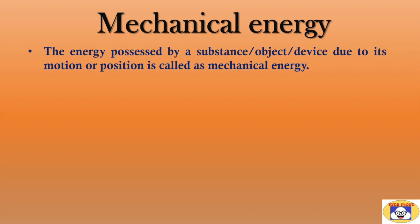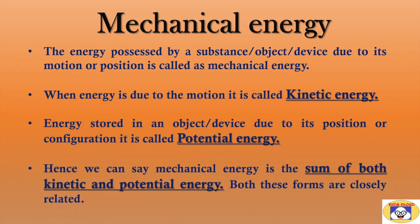The next form of energy is mechanical energy. The energy possessed by a substance, object or device due to its motion or position is called as mechanical energy. If we split this definition, we get two additional forms of energy. When energy is due to motion, it is called kinetic energy. And energy stored in an object or device due to its position or configuration is called potential energy.